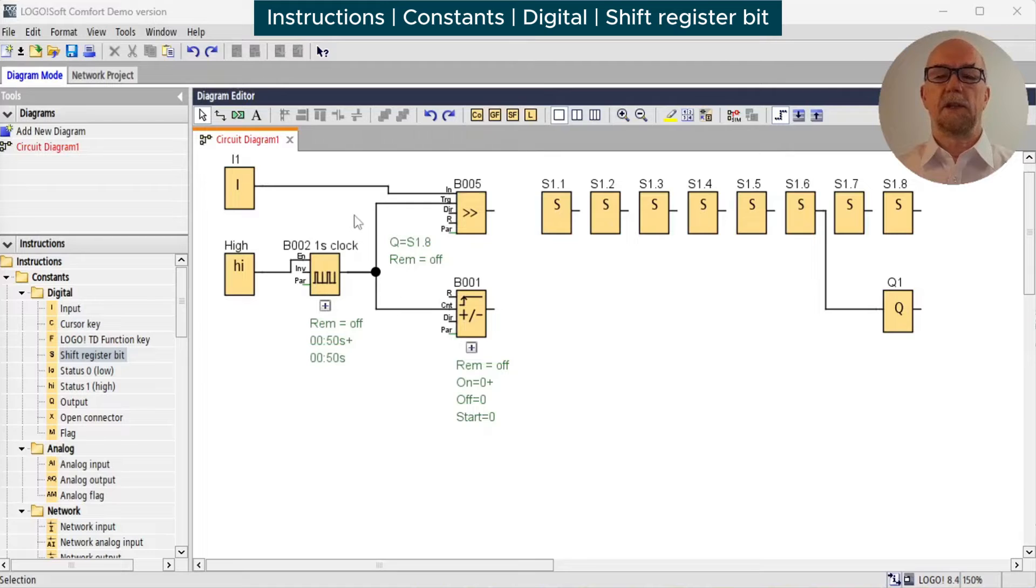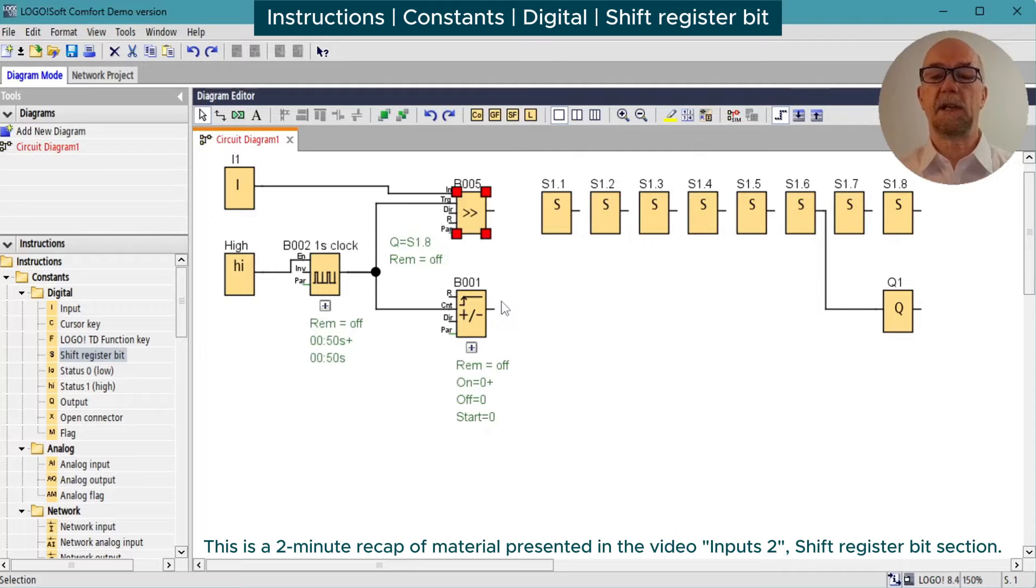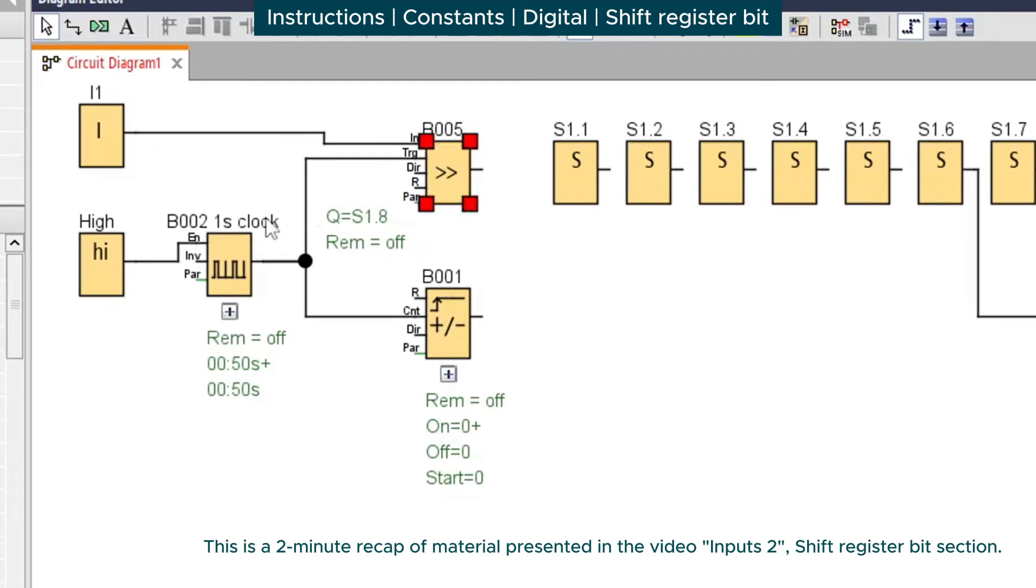The shift register is the PLC's version of the children's party game pass the parcel. To demonstrate, let's say we have a machine making product. An inspection sensor is connected to input 1, and this switch is high if a faulty product is detected.